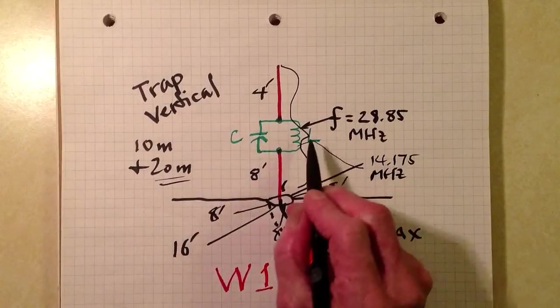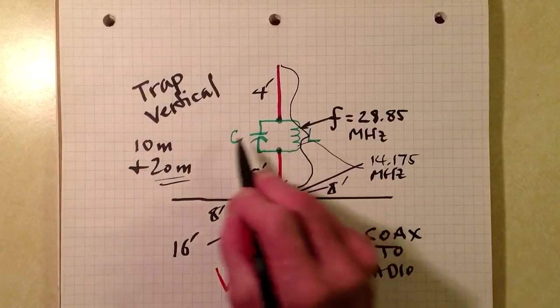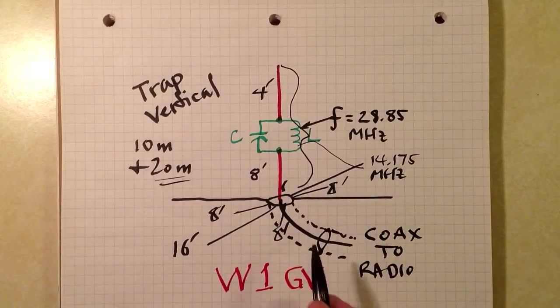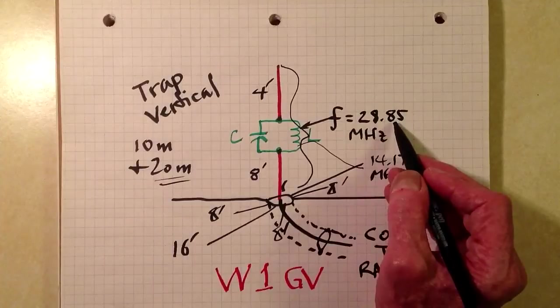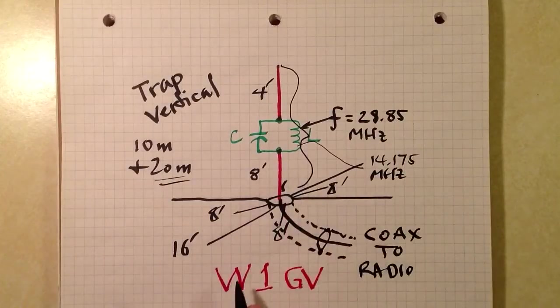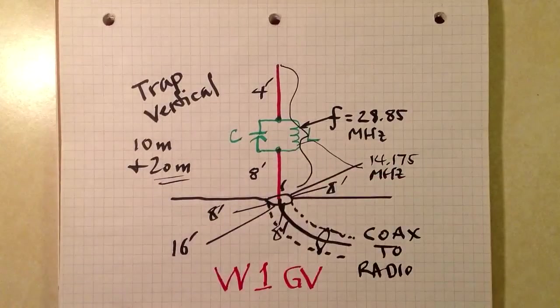It is a parallel resonant LC circuit, inductance capacitance, resonant at 10 meters right in the center of the 10 meter band. This acts as a band stop filter on 10 meters.